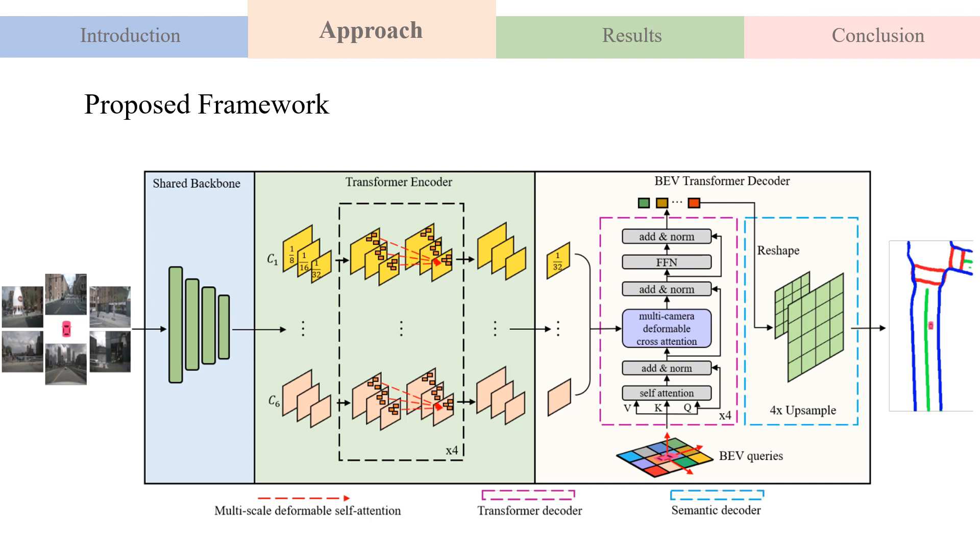Here is the pipeline of the proposed framework: A shared backbone to extract feature maps of arbitrary cameras, the transformer encoder to embed feature maps by a self-attention module, and the BEV transformer decoder to process BEV queries by cross-attention mechanism and output the final BEV semantic segmentation result.